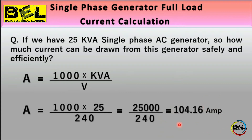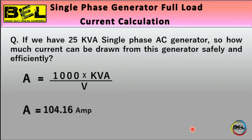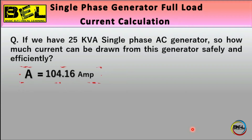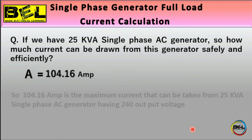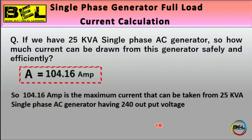So 104.16 amperes — approximately 105 amperes — is the maximum current that can be drawn from a 25 kVA single phase AC generator at 240 V AC. However, the maximum current should never be drawn continuously for safe operation.